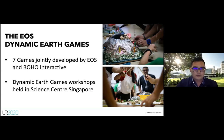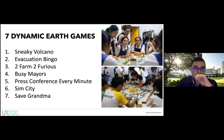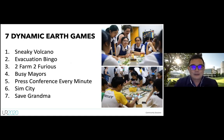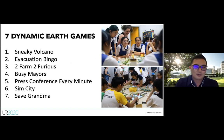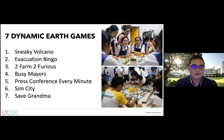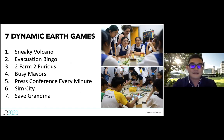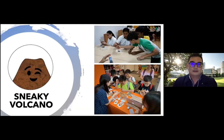There are seven Dynamic Earth Games, and their titles look pretty interesting — just by looking at them you'd have no idea how they're played or what they're about. The most striking one is number seven, called 'Save Grandma,' which I'll explain the origin of shortly.